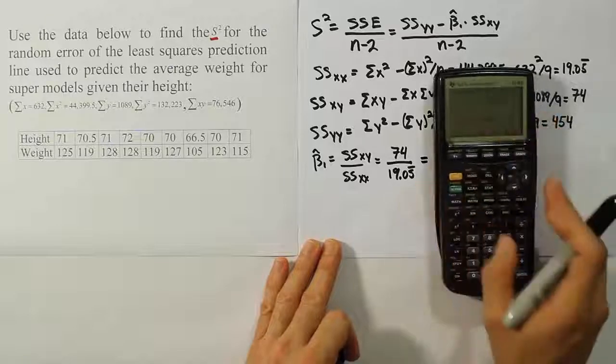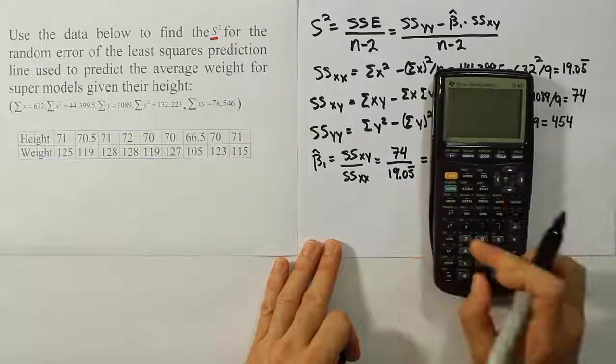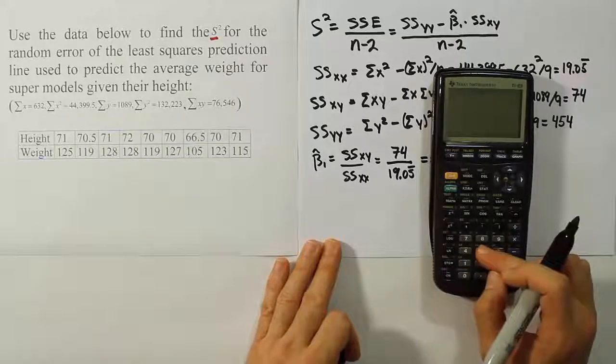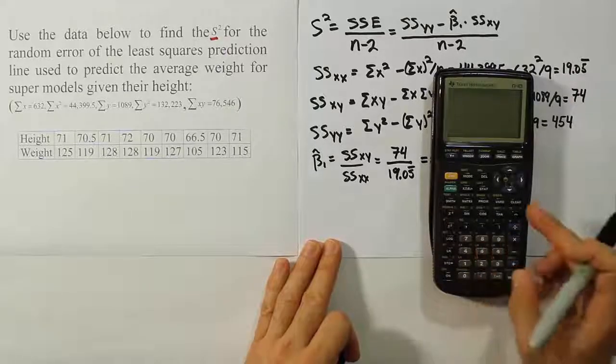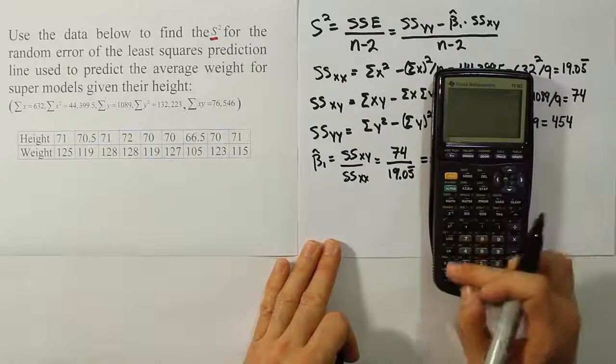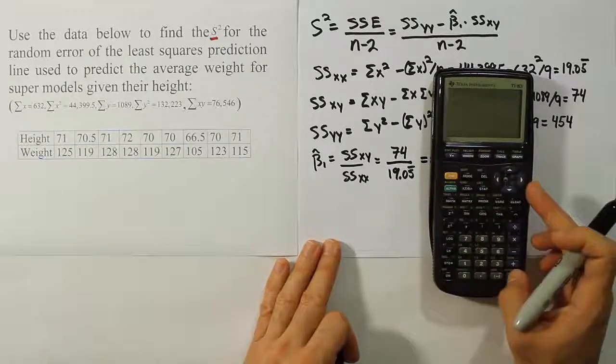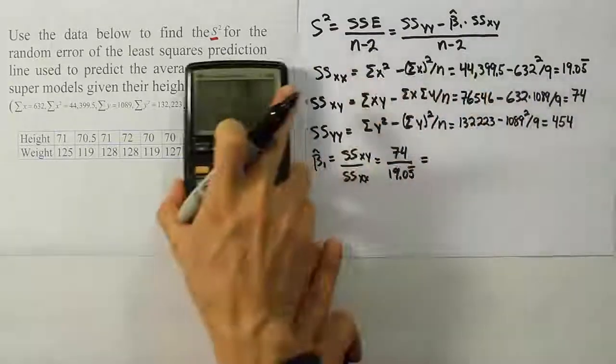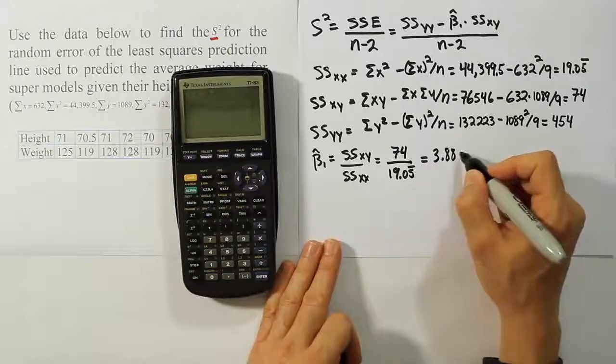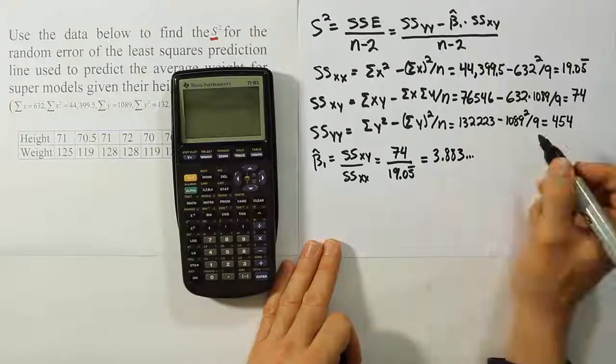What does that turn out to be when we work that out? Well we'll have 74 divided by 19.055555. Hit enter and we get the answer 3.8338. So I'm going to store that in my calculator as X, and I will use that value here for my slope, 3.883 dot dot dot.